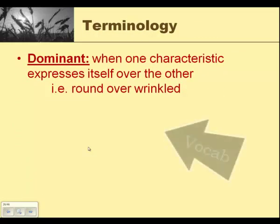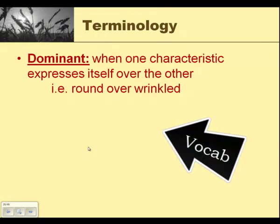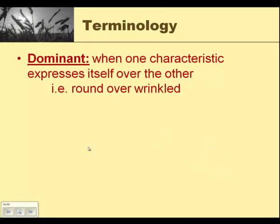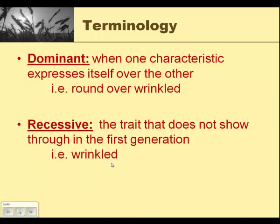Now some key terminology here. A dominant trait is when one characteristic expresses itself over the other. So if round shows up over wrinkled, round becomes the dominant trait. If tall is dominant over dwarf, tall becomes the dominant trait. Again, these are in red, so you should be making note of them or double checking your vocabulary preloading activity. Recessive is the trait that does not show through in the first generation. So if round exerts itself over wrinkled and round is dominant, wrinkled then becomes the recessive trait.